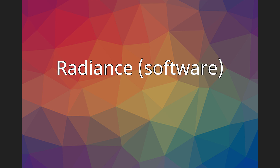Greg Ward started developing Radiance in 1985 while at Lawrence Berkeley National Laboratory. The source code was distributed under a license forbidding further redistribution. In January 2002, Radiance 3.4 was relicensed under a less restrictive license. One study found Radiance to be the most generally useful software package for architectural lighting simulation, and noted that it often serves as the underlying simulation engine for many other packages.